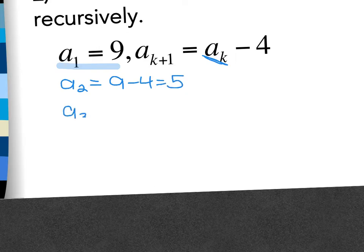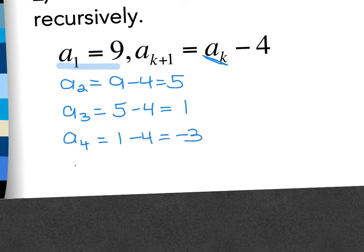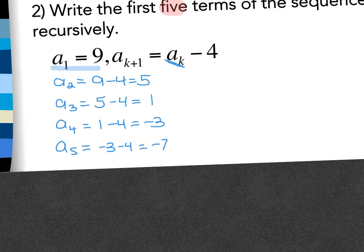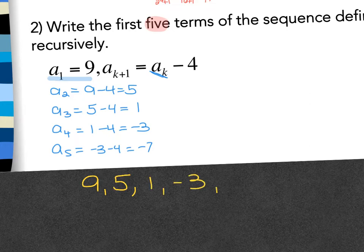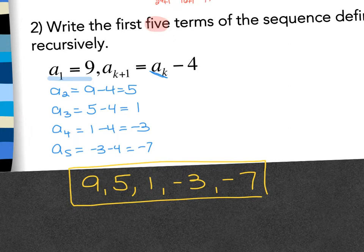And then a sub 3 would be 5 minus 4 which would be 1, a 4 would be 1 minus 4 which would be negative 3, and a 5 would be negative 3 minus 4 which is negative 7. So in order, first term to fifth term would be 9, then 5, then 1, then negative 3, then negative 7. You want to make sure you include the first one which was given to you.